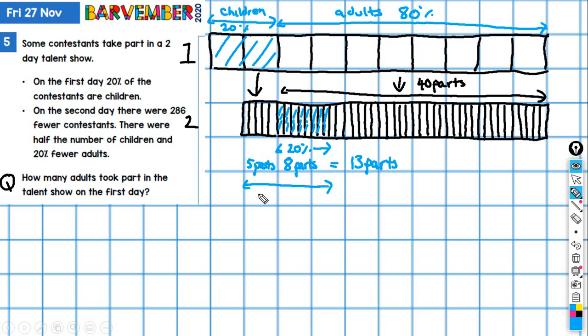Why is that important? Because we know that the 13 parts equals 286. So now we need to do 286 and divide that by 13 to find out the value of each of these parts. 286 divided by 13 is 22. So we now know that each of these parts has a value of 22.